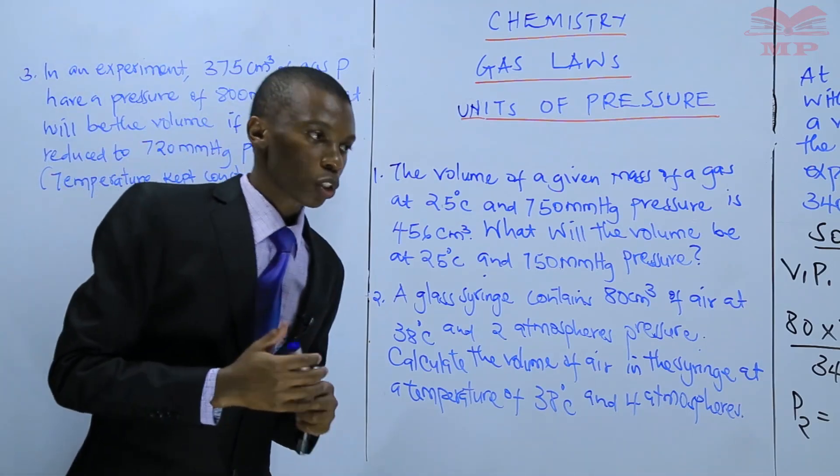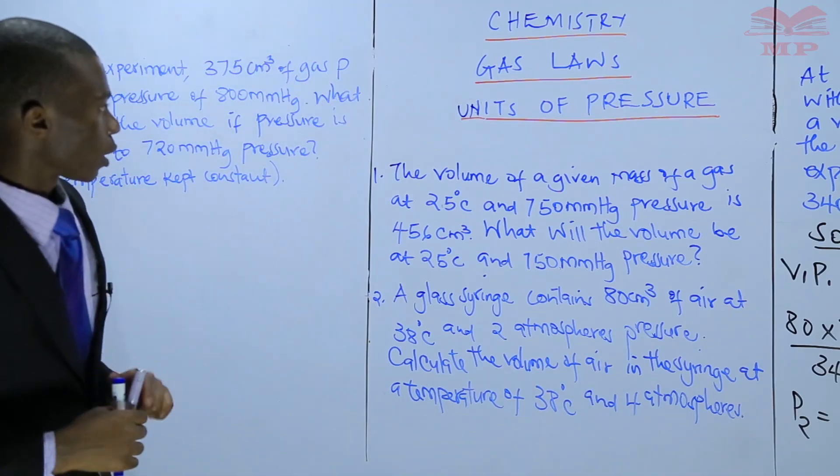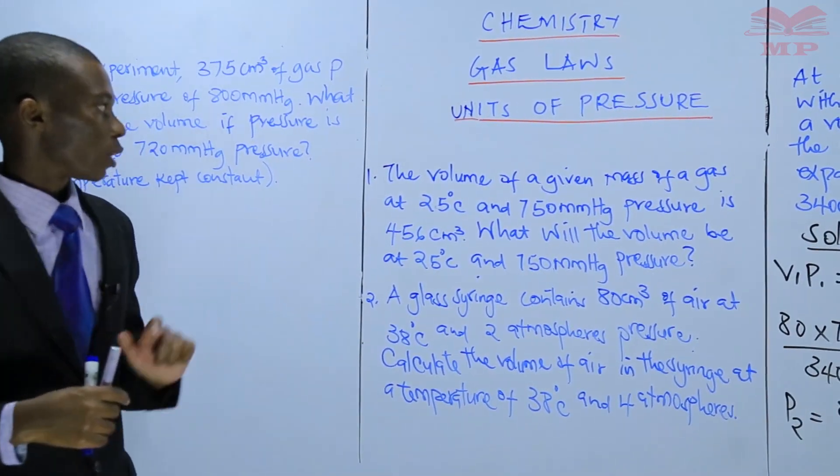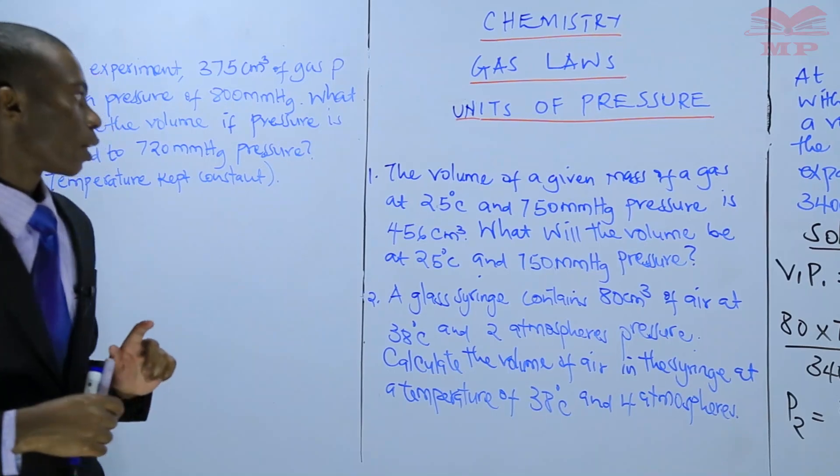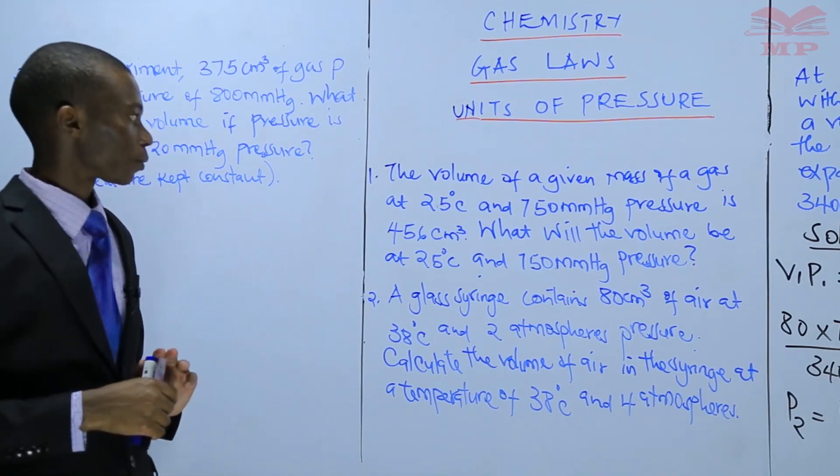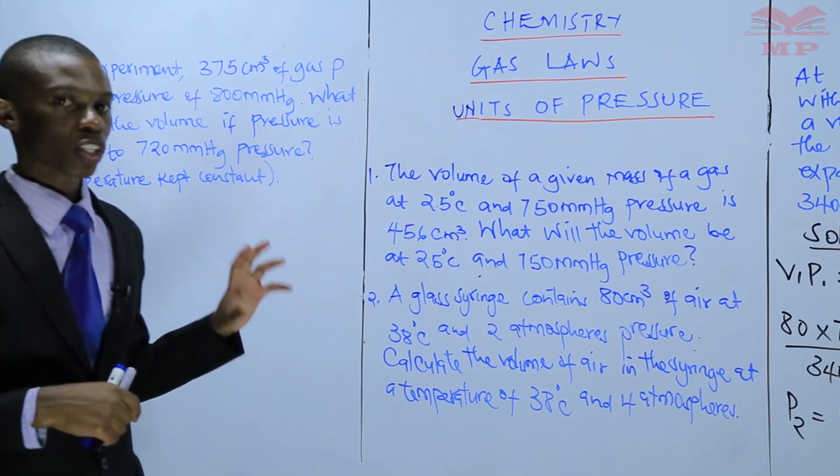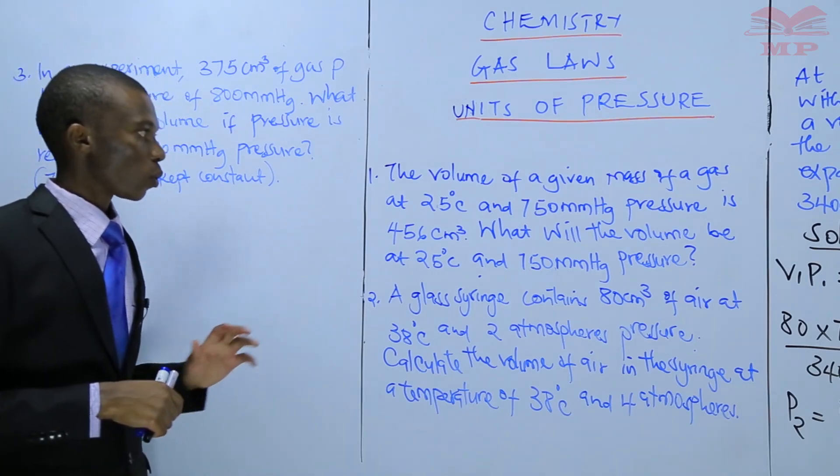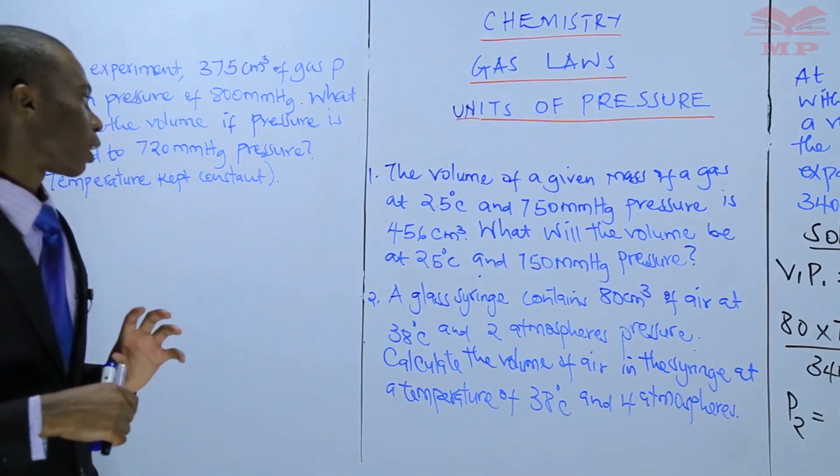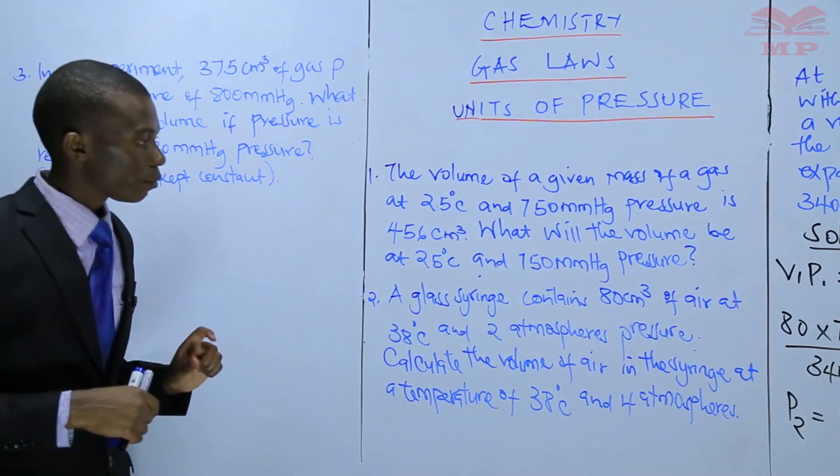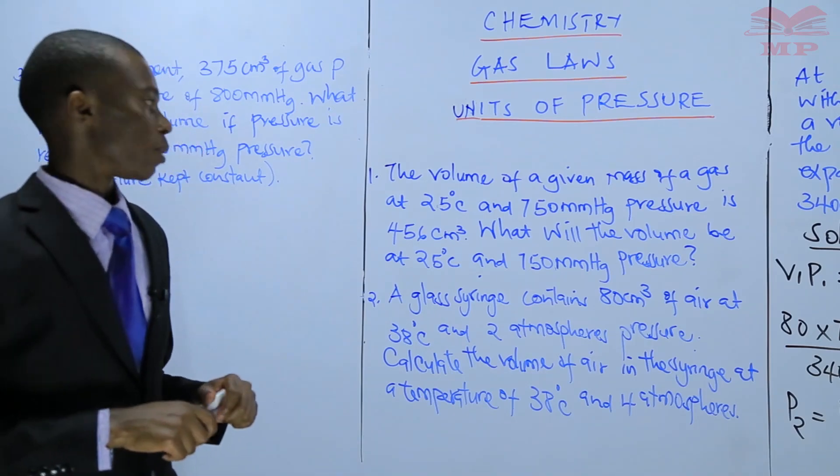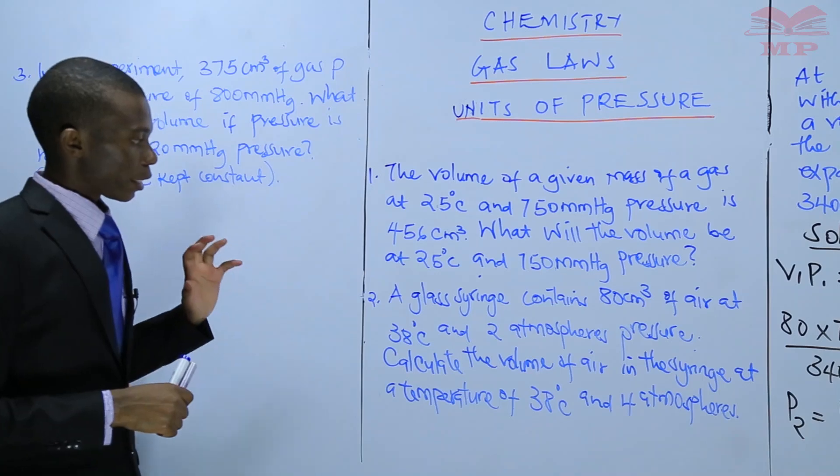Those are the assignment questions. The first one says: the volume of a given mass of a gas at 25 degrees Celsius and 750 millimeters of mercury pressure is 456 cubic centimeters. What will the volume be at 25 degrees Celsius and 750 millimeters of mercury pressure?